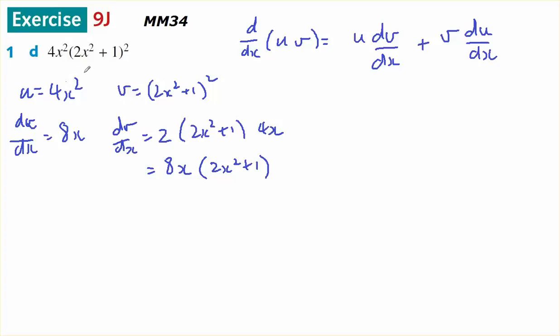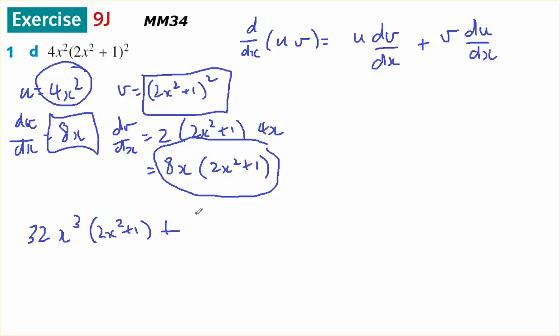Therefore, the derivative is going to be u times dv/dx. So 4 times 8 is 32. x² times x is x³ times (2x² + 1) to the power of 1, plus v times du/dx, 8x(2x² + 1)².